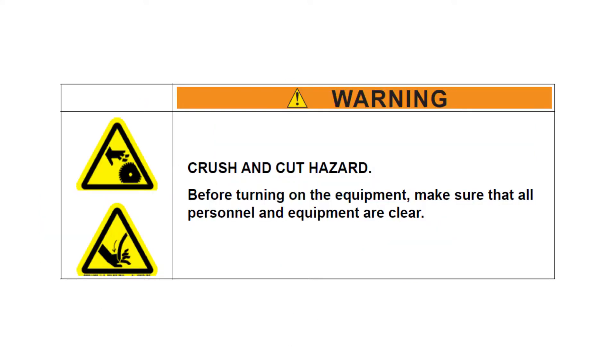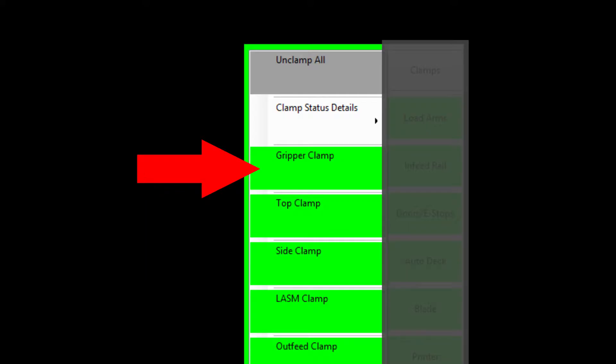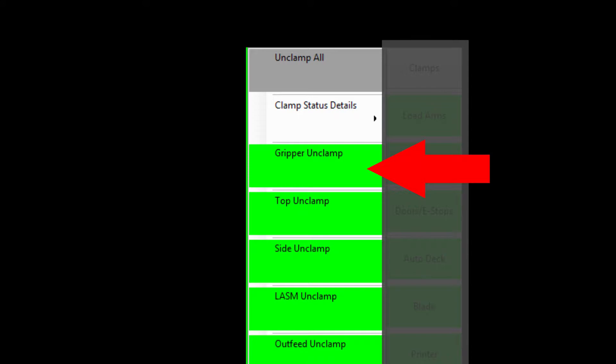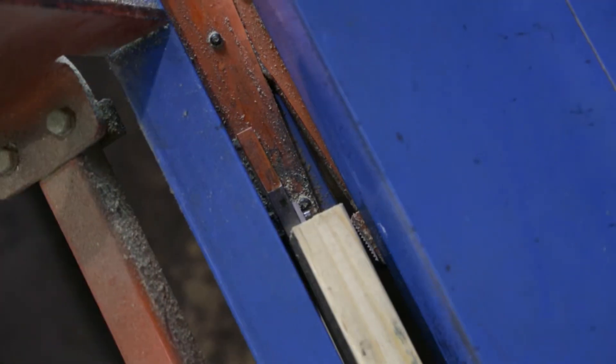Make sure personnel are clear of the gripper and press the clamp status indicator on the blade home screen. This will open the clamp menu. From there, press the gripper clamp/unclamp button to open or close the gripper. Verify that the gripper clamp arm is opening and closing smoothly.